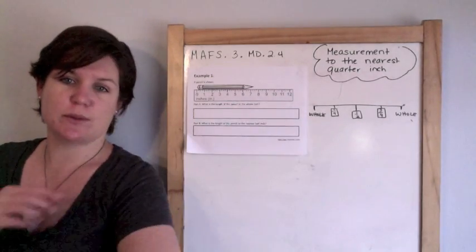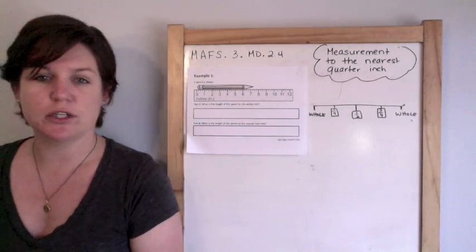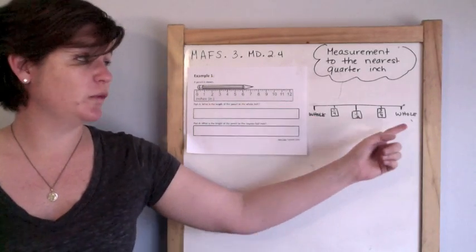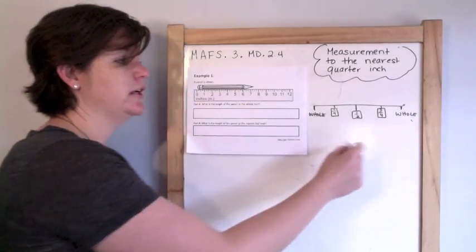Before I begin, let me show you this right here. This is sort of like a number line but what you would see on a ruler. So we have a whole number which could be zero, we have a whole number which could be one or it could be two and three or four and five however you see fit.